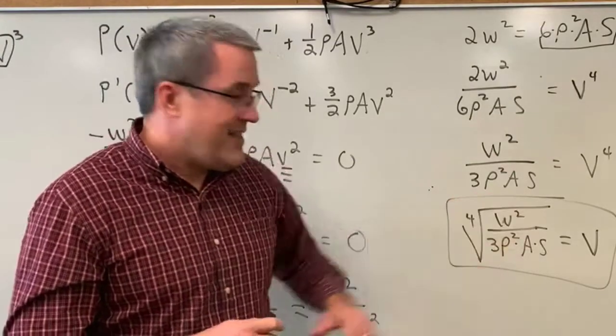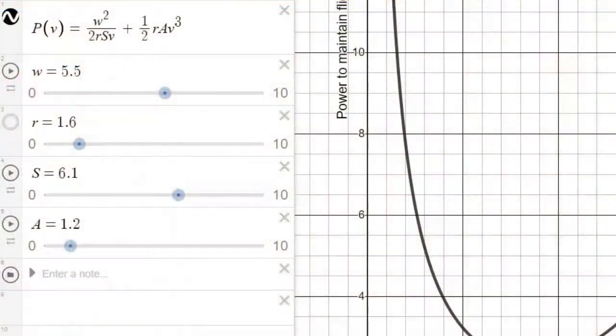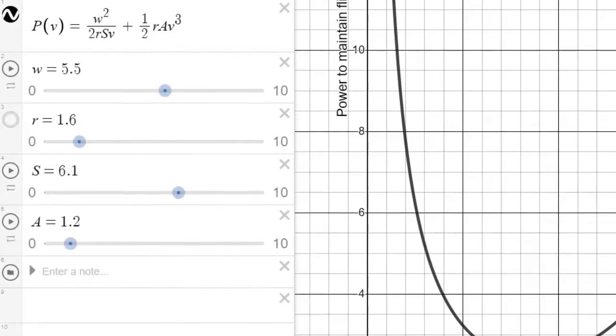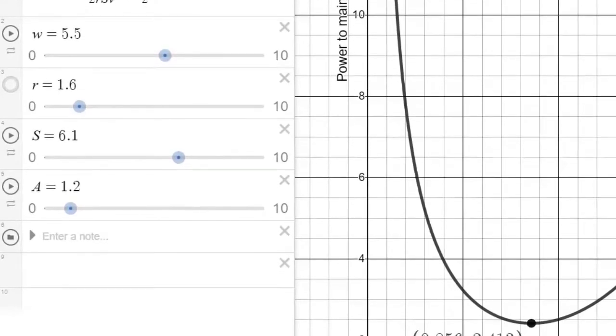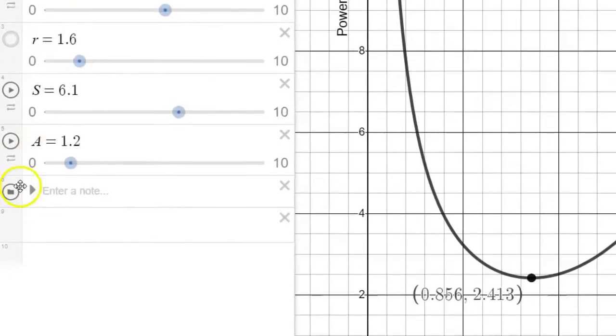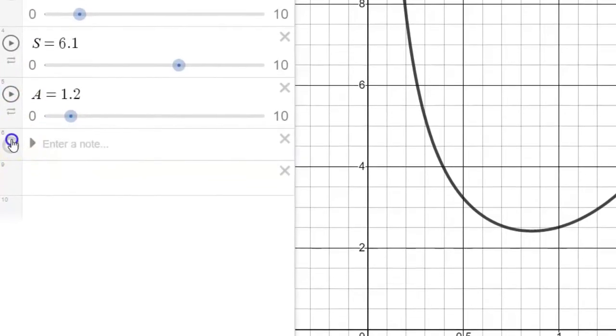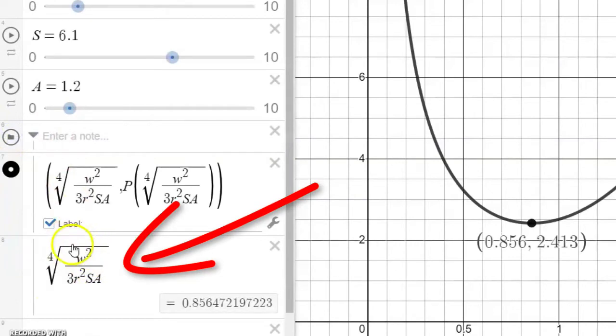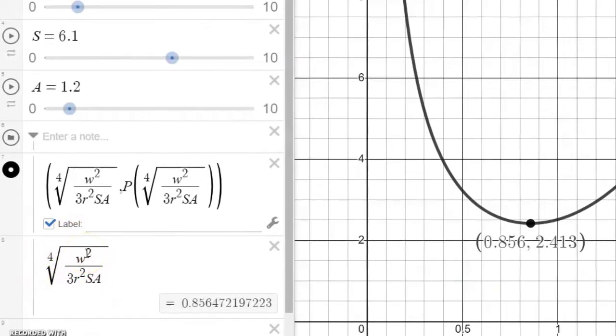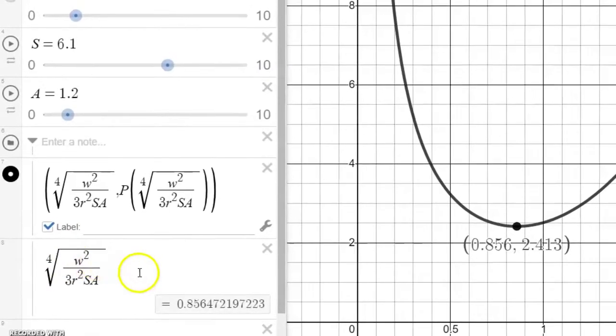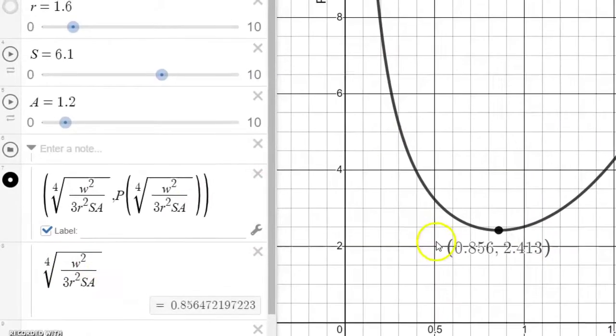So, we saw with our work on the board that the velocity needed to minimize the power to maintain flight was a kind of a crazy formula. The fourth root of a whole bunch of things. I want to show it to you here on Desmos though. The formula that we were describing is right here. And what I want you to see here now that we know this, that the fourth root of W squared over 3 rho squared SA is the velocity, the formula for the velocity that will minimize this power function. I want you to see that we can visualize it on the graph.